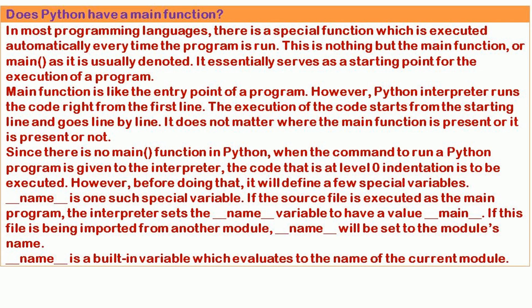Does Python have a main function? In most programming languages, there is a special function which is executed automatically every time the program is run — the main function, which serves as the entry point for execution. However, the Python interpreter runs the code right from the first line, going line by line. It does not matter where the main function is present or whether it is present at all. Since there is no main function in Python, when the command to run a Python program is given to the interpreter, the code at level zero indentation is executed.